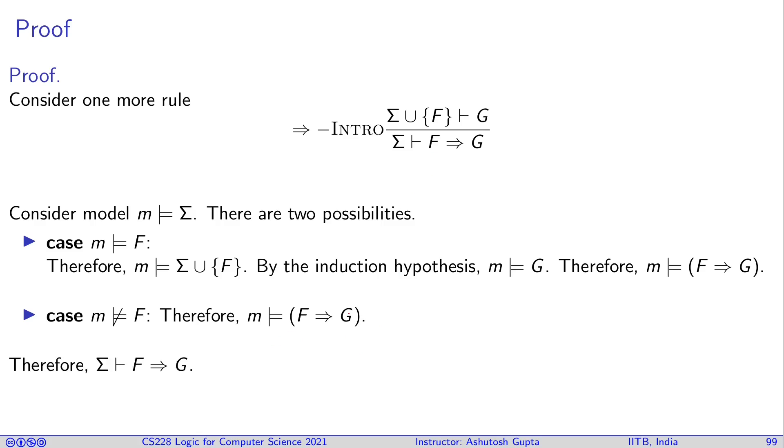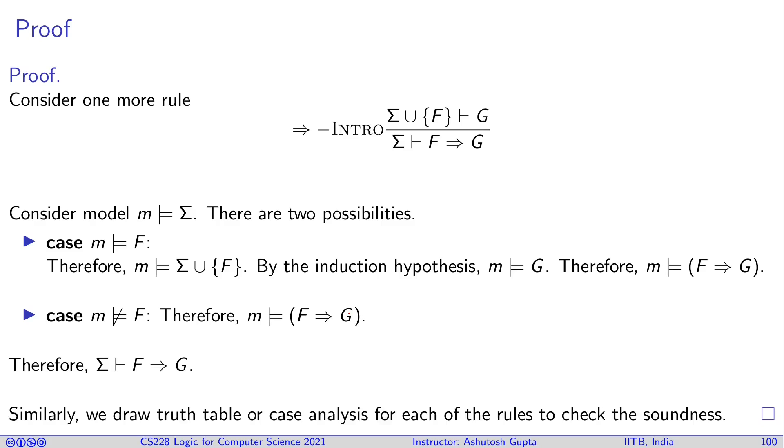So that's concluded. Similarly, you have to take every proof rule. Some proof rules will be fairly straightforward, like conjunction. For some of them you need to do case analysis, and then you will be able to prove the correctness of each of the proof rules. For example, OR elimination would be an interesting choice to write down the proof for.